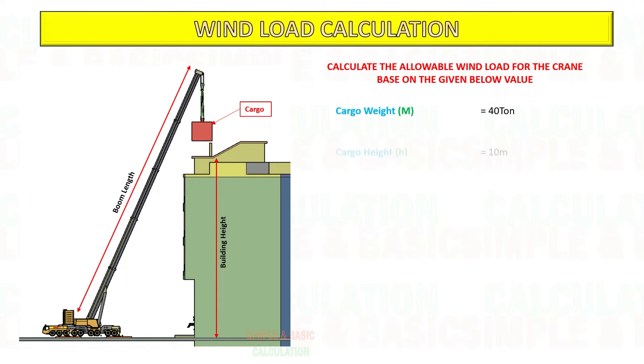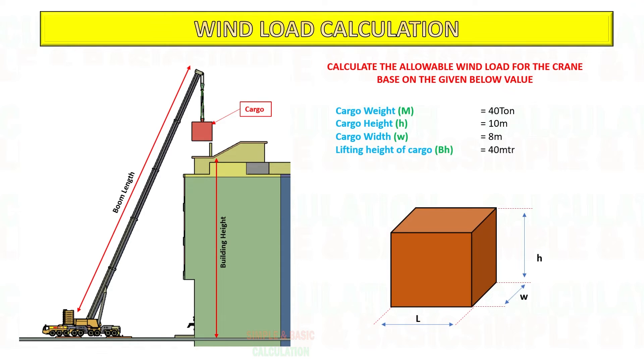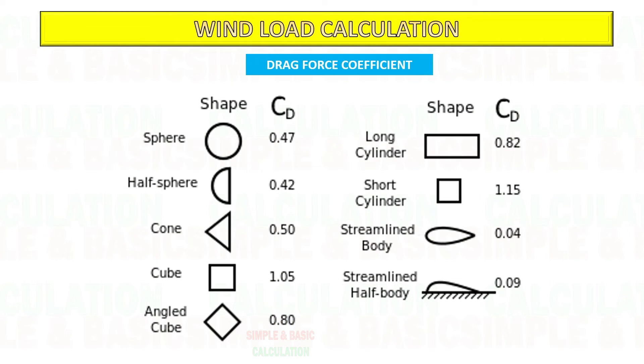In this example, we have a task to lift the cargo on top of the building. The weight of the cargo is 40 ton with height of 10 meter and width of 8 meter. Calculate the permissible wind load for the crane. This is drag force coefficient based on the shape of the cargo.